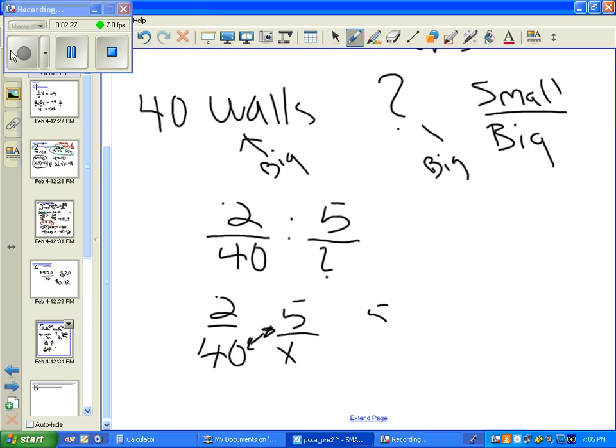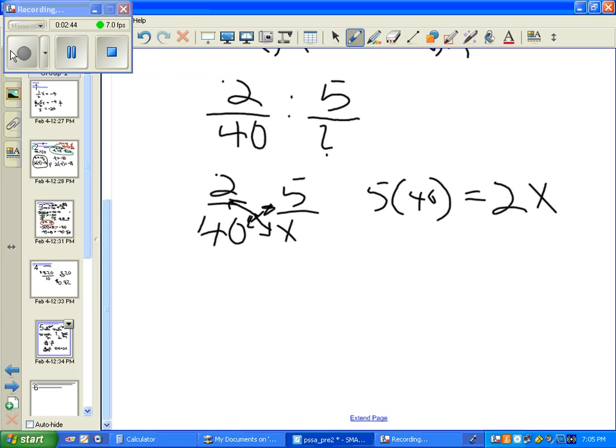We'll cross multiply this. We'll make it five times the quantity 40, and we'll equal that to this cross multiplication product. So five times 40 is 200.